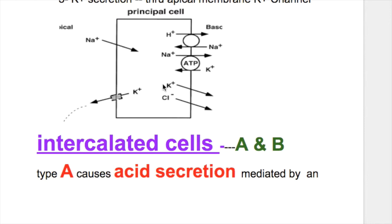The third function of the principal cell is potassium secretion, occurring through the apical membrane. When sodium is absorbed, the electronegativity of the cell increases, so potassium enters the cell via the sodium-potassium ATPase pump and is then excreted out through secretion.